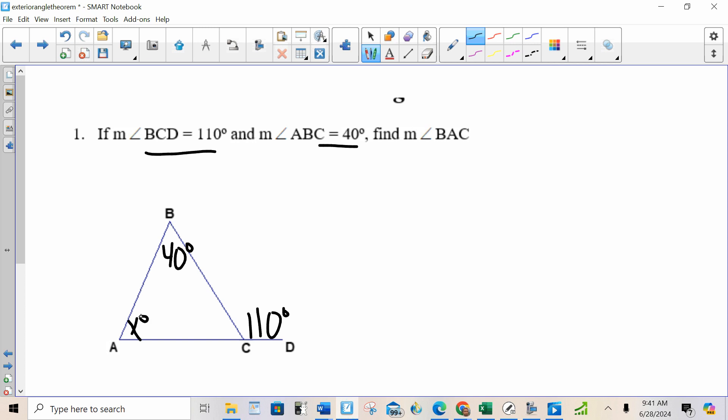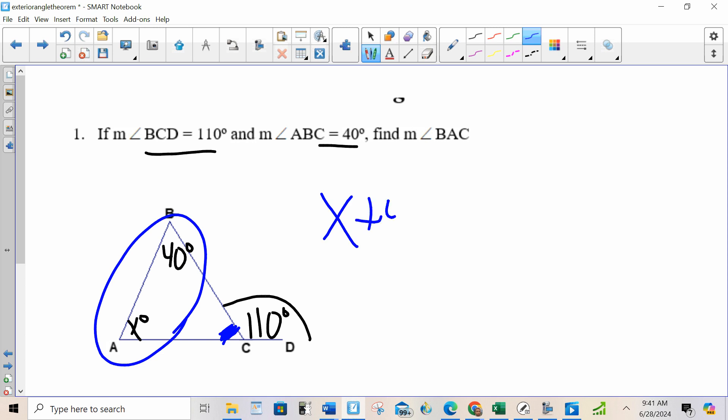The exterior angle theorem states when I have an exterior angle, meaning this angle right here, an angle outside the triangle, is equal to the sum of the two non-adjacent interior angles. By non-adjacent, I'm saying not the one here, but the other two, the ones that aren't touching the angle. So X plus 40 equals 110.